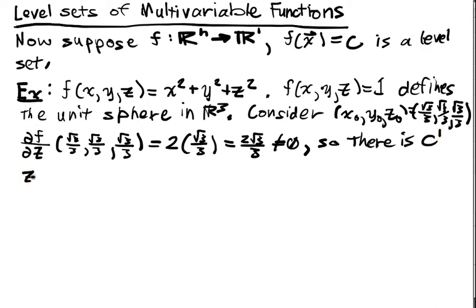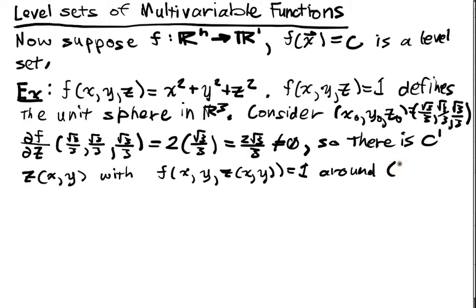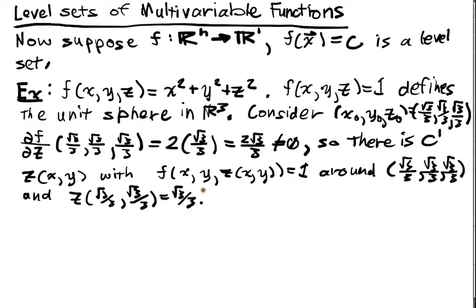that I have a C¹ function z(x,y) with f(x, y, z(x,y)) equal to 1 around the point √3/3, √3/3, √3/3. And, of course, z(√3/3, √3/3) is equal to √3/3. That's my implicit function theorem.